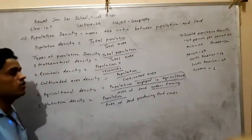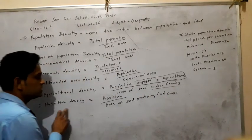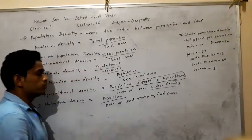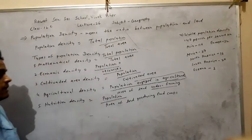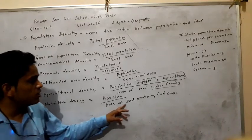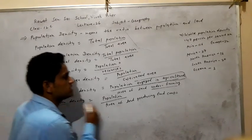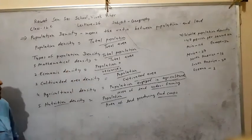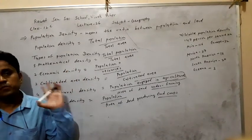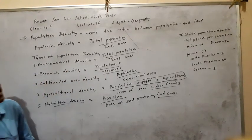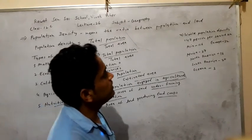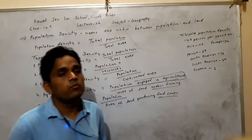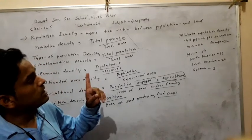In the lower side, for agricultural density it is the area of land under farming. For nutrition density, the formula is population divided by area of land producing food crops.